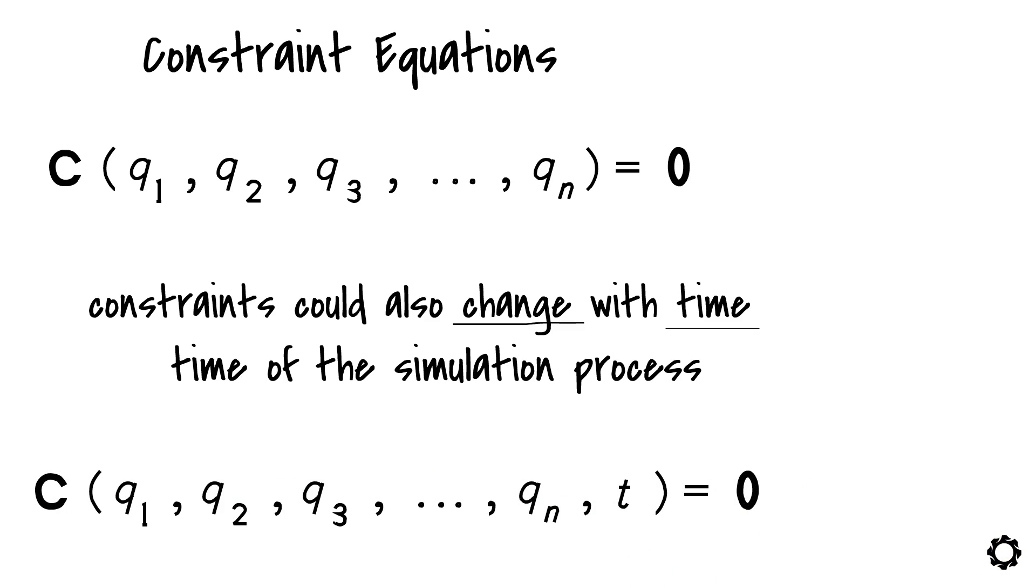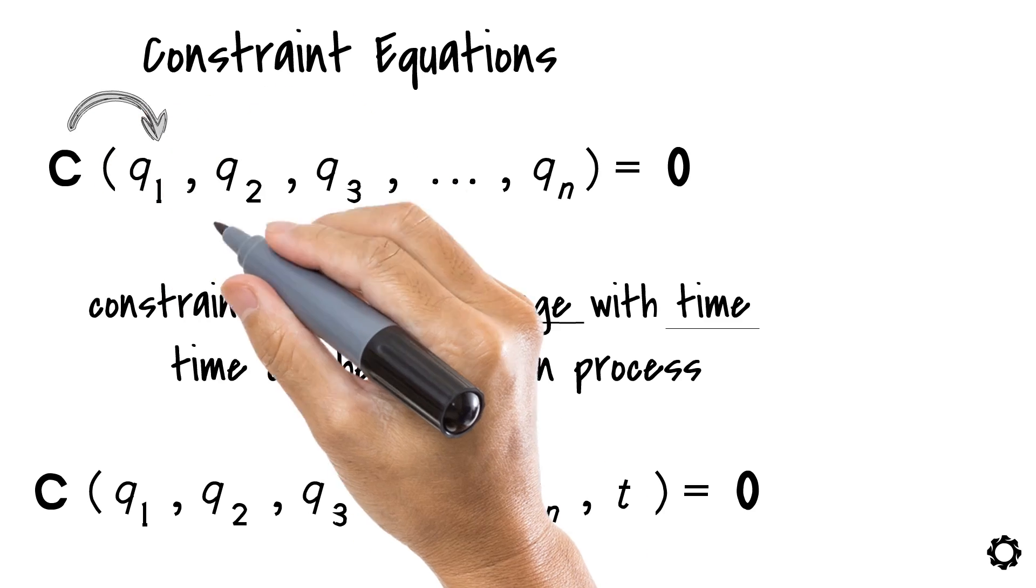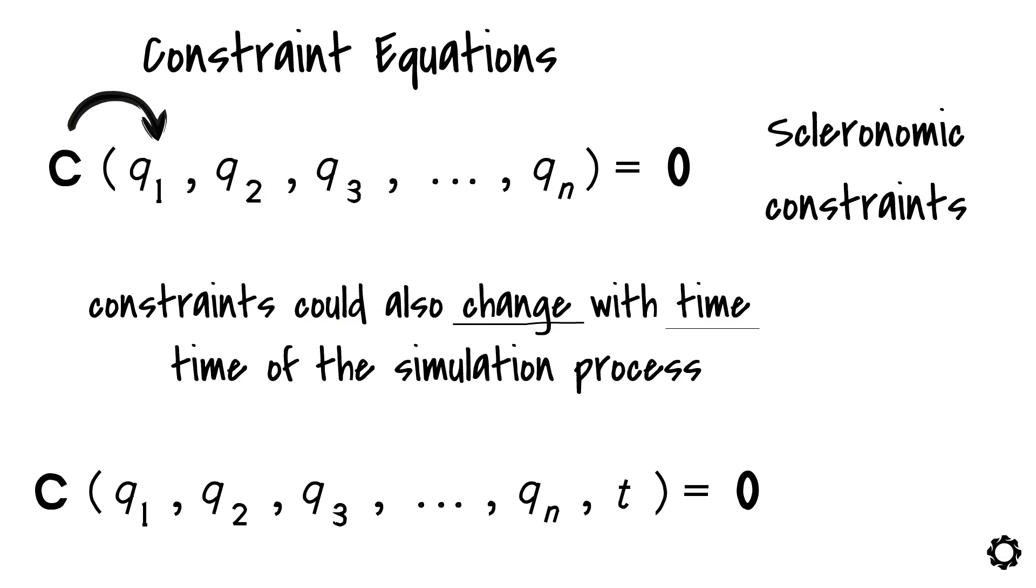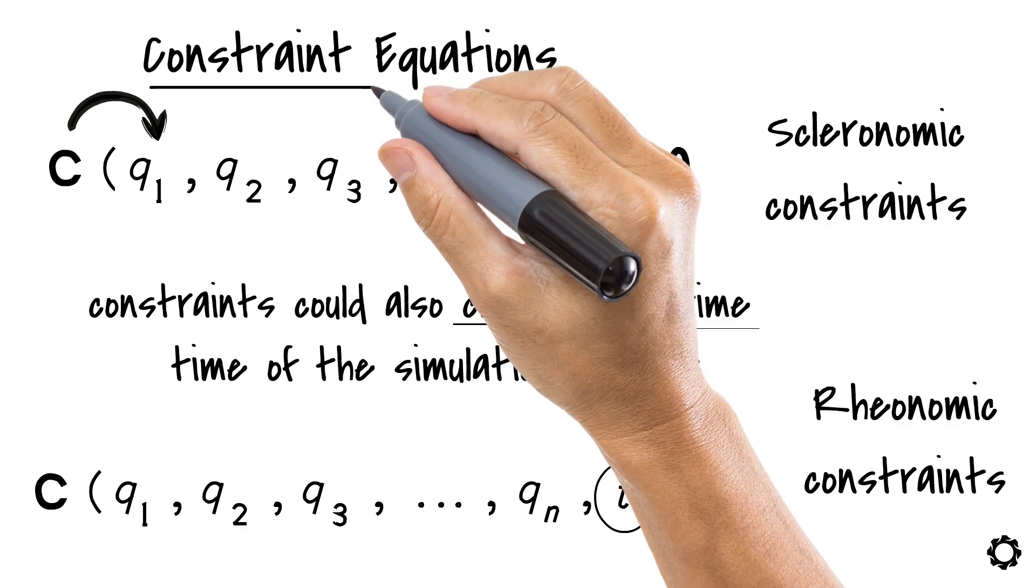If your set of constraint equations depend only on the generalized coordinates, then we are talking about scleronomic constraints. If they depend on time also, they are called rheonomic constraints. In this way, we can have our first classification of constraints.